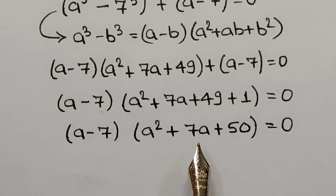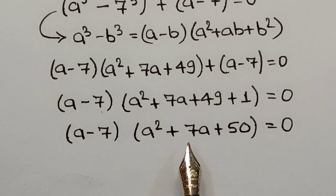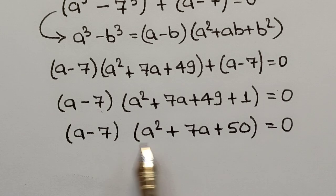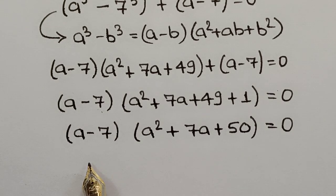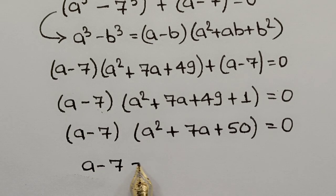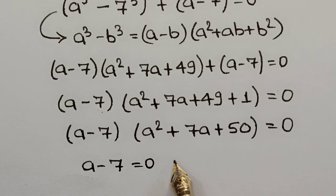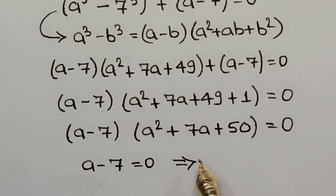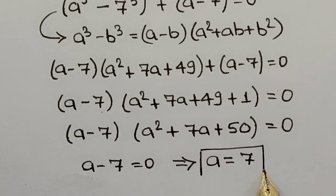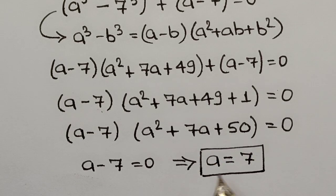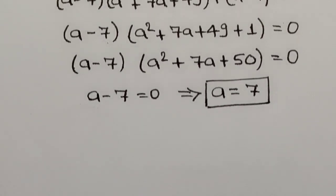The equation has now been separated into two factors. From the first factor, A - 7 = 0, which gives us the first answer: A = 7.